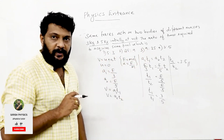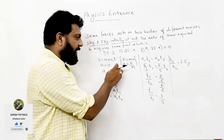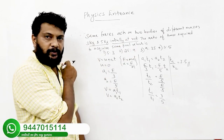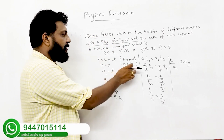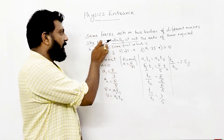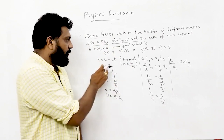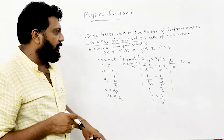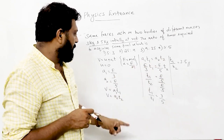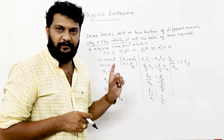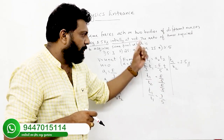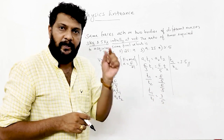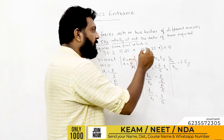Using v = u + at, since u = 0, v = at so t = v/a = v·m/F. Therefore T1/T2 = m1/m2 = 3/5. The ratio is 3:5, so answer 4 is correct.